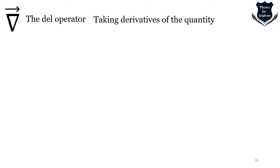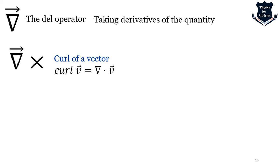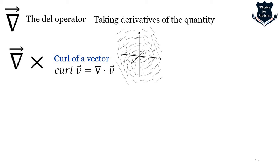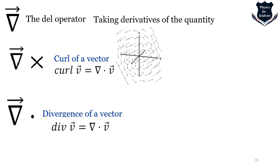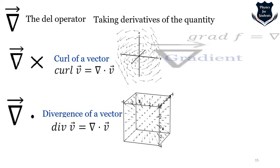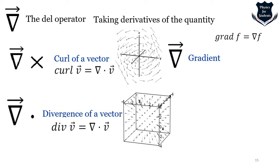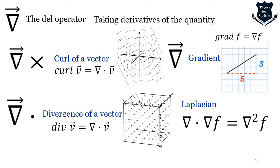The del operator finds the derivative of a vector, similar to how d/dx is a derivative operator in calculus. Some key applications include: the curl of a vector, which gives the measure of angular velocity or rotation at a point in the field; the divergence, which shows how a field radially points out through a region; the gradient, which gives the local steepest slope; and the Laplacian.